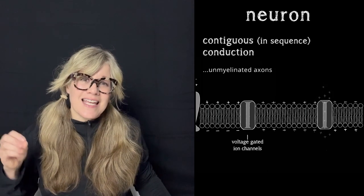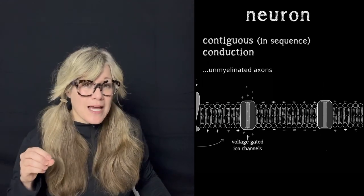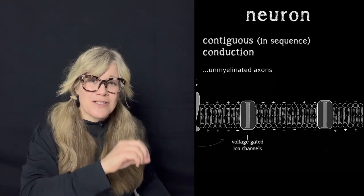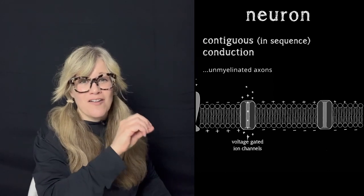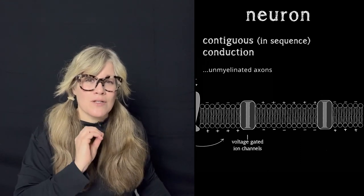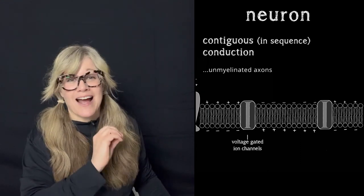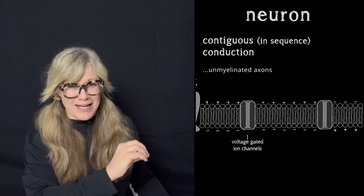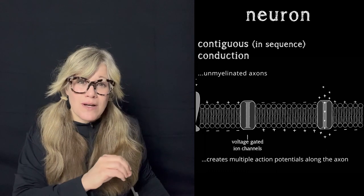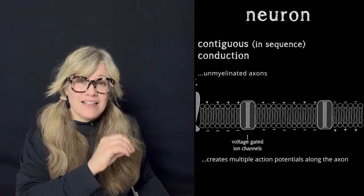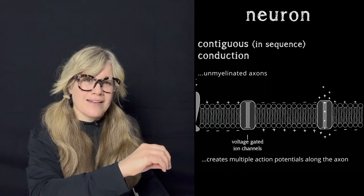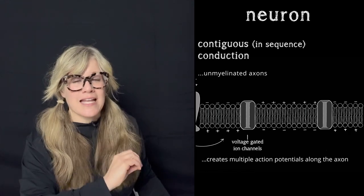Contiguous means in sequence, and that's what's happening. Action potentials are igniting new identical action potentials in sequential patches of plasma membrane along the axon by way of an influx of sodium ions through voltage-gated ion channels at each patch. This depolarizes the membrane to a voltage threshold that launches another action potential in the next section, and so on, from beginning to the end of the axon.